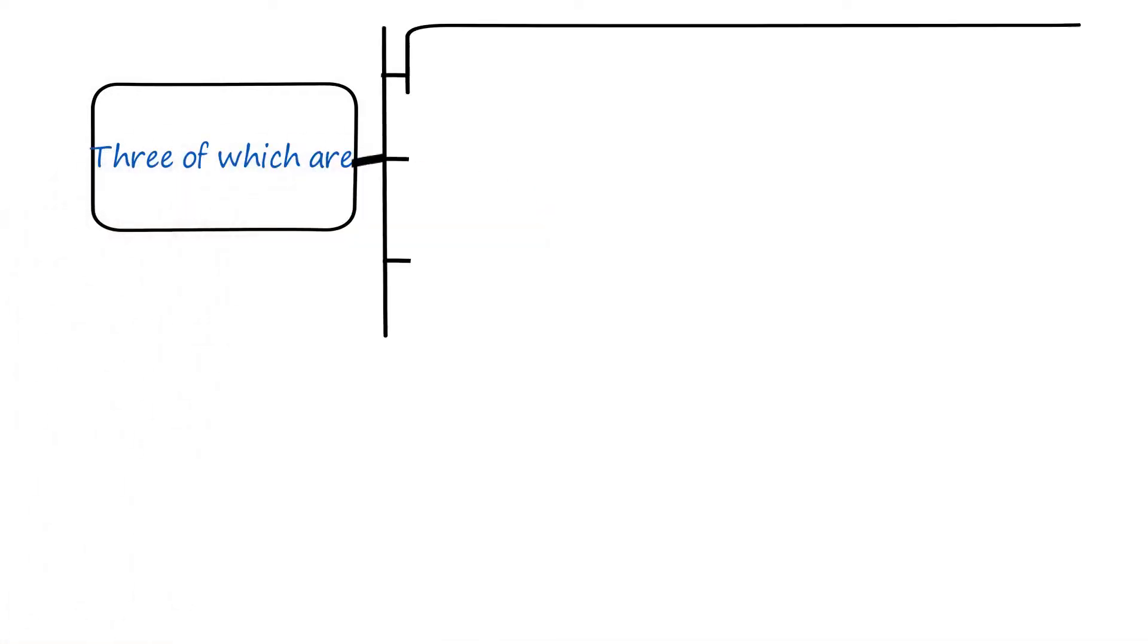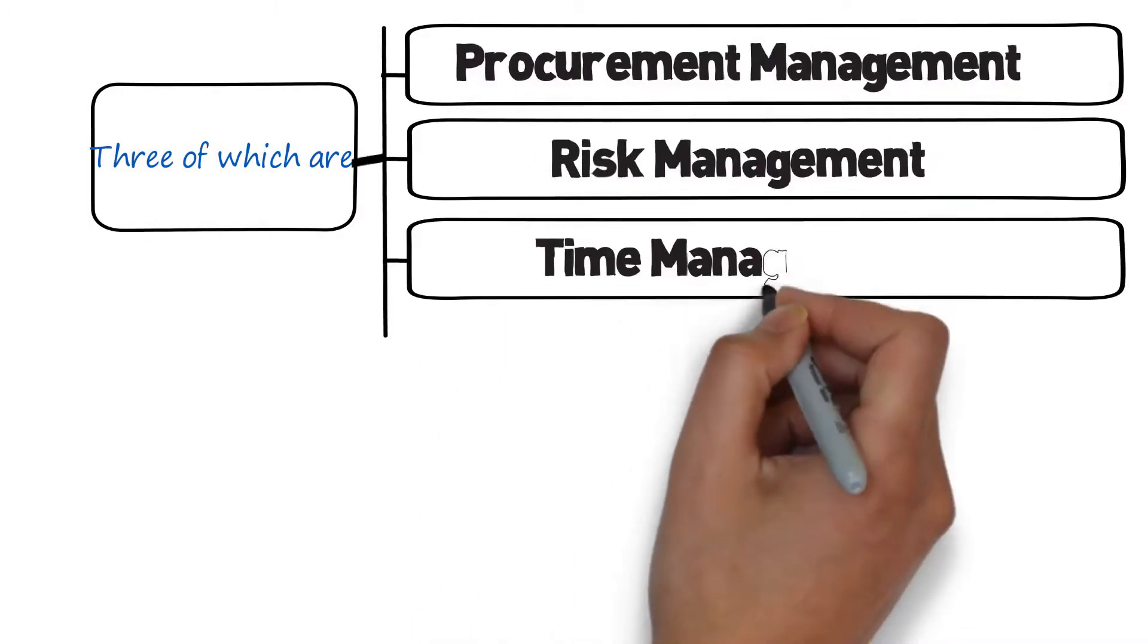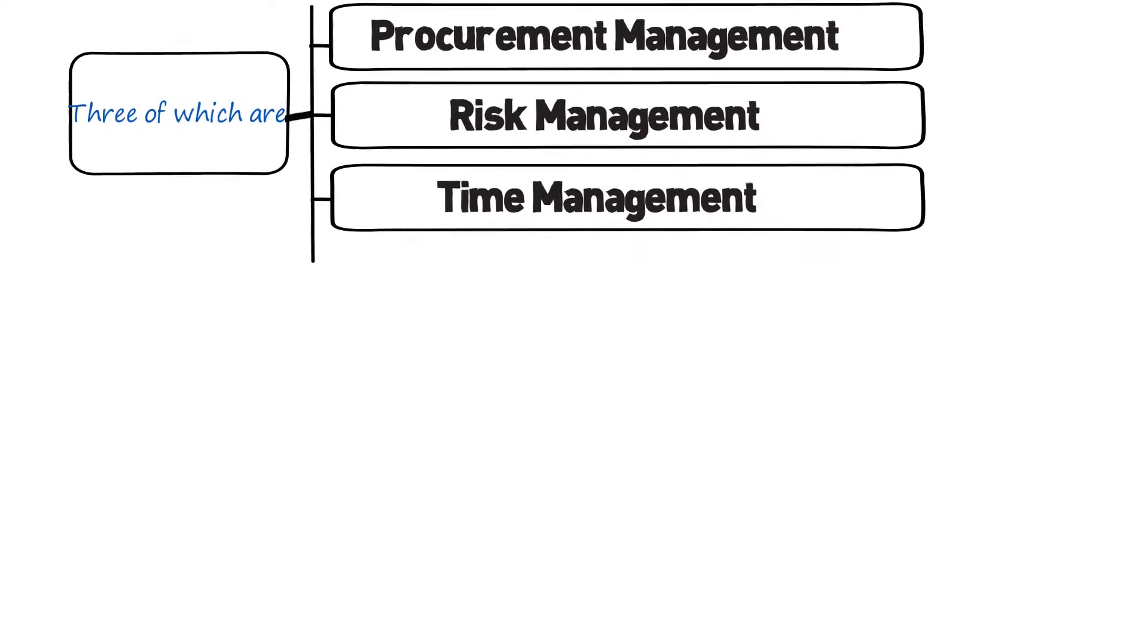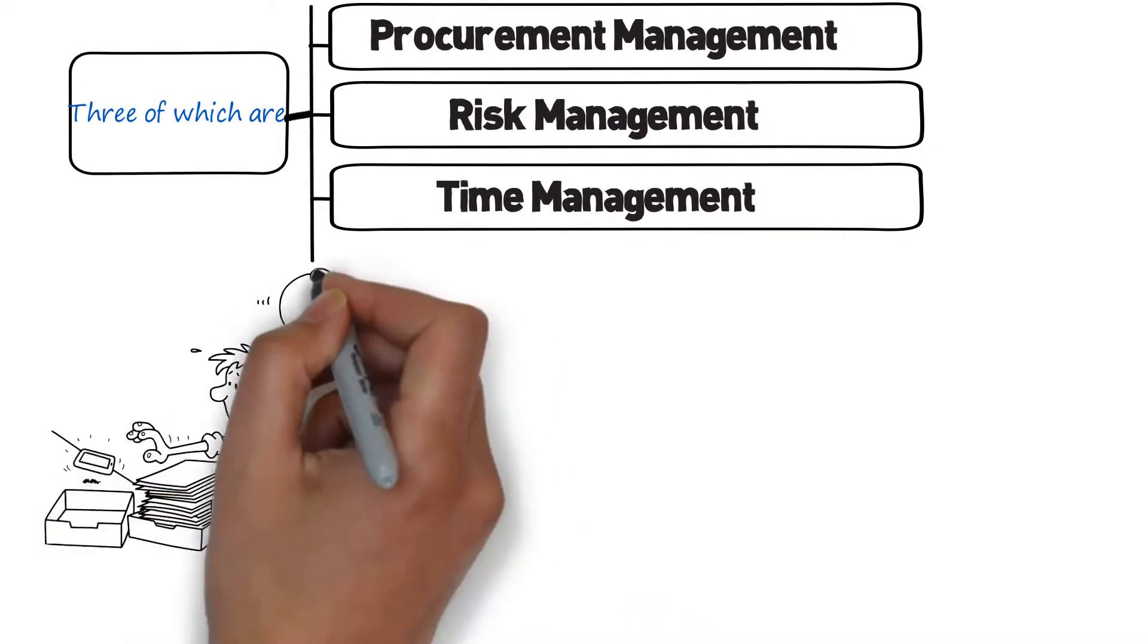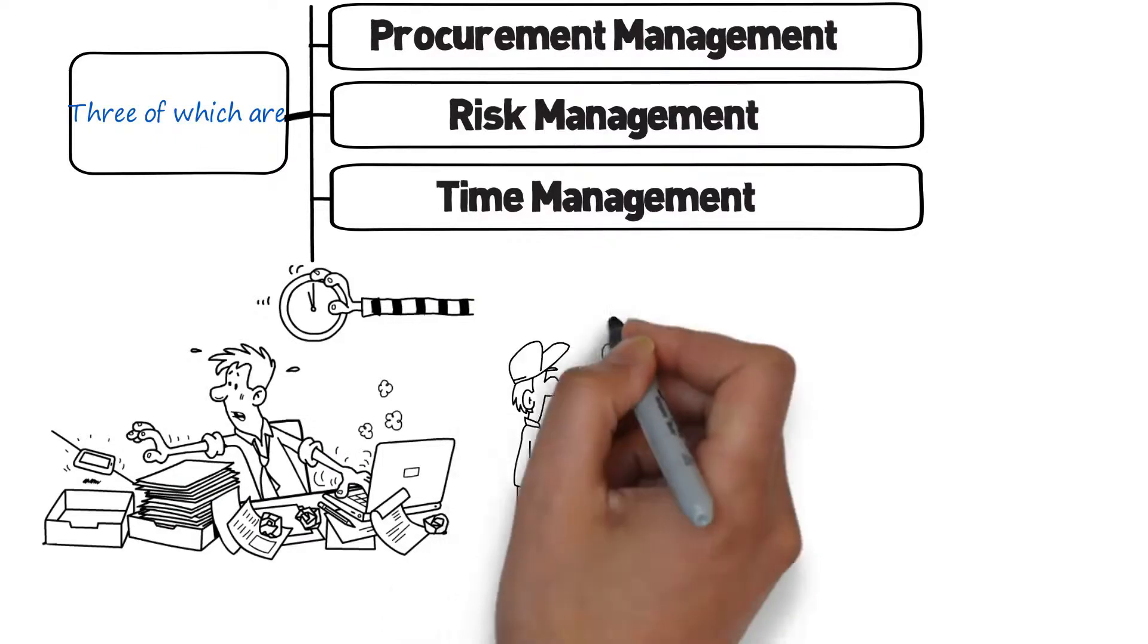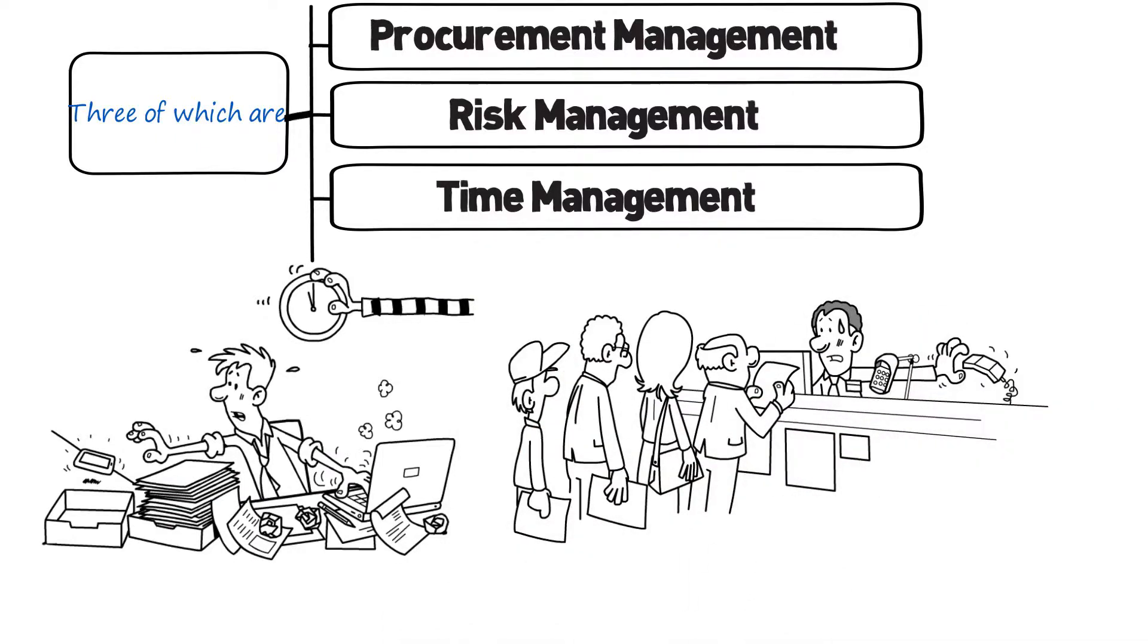Three of which are procurement management, risk management, and time management. The triple constraint is a way to measure a project in terms of time and cost. If the project is delayed or overdue, it will affect the cost. If it has gone over budget, it will affect the cost and the scheduling. At the initiation phase, four key project documents are created.